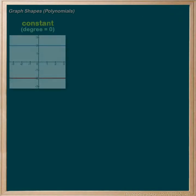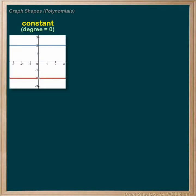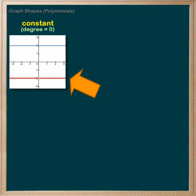The most basic polynomial is a constant — only one term and no variables — and with no variables it also has a degree of zero. Its graph looks like this: positive in blue and negative in red. It's just reflected vertically with the negative.